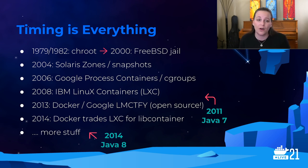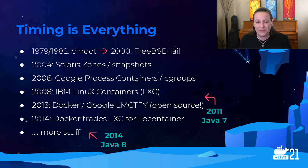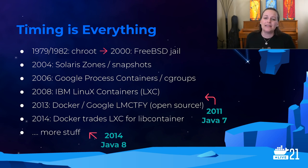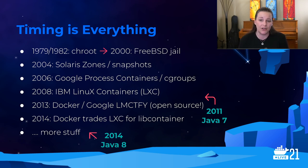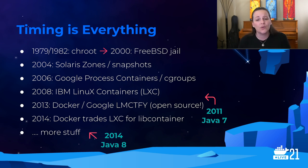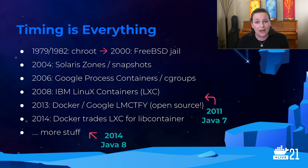Then Google jumped in with their process containers in 2006. They later renamed those to CGroups, which centered around isolating and limiting the resource usage of a process. In 2008, CGroups were merged into the Linux kernel, which along with Linux namespaces led to IBM's development of Linux containers. And now things get even more interesting. Docker was open sourced in 2013. That same year, Google open sourced their "let me contain that for you" project, which provided applications the ability to create and manage their own subcontainers. And from here is where we saw the use of containers explode — Docker containers specifically.